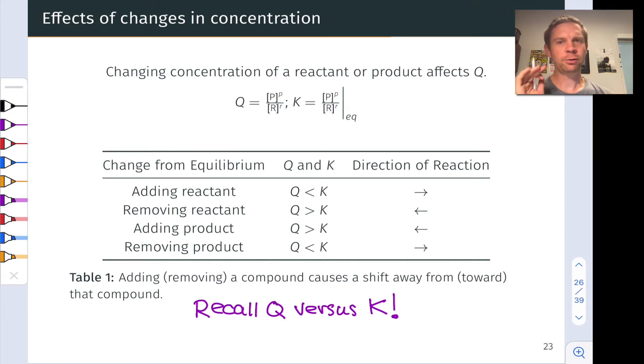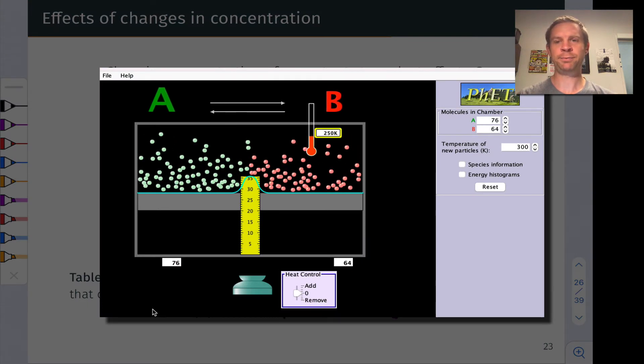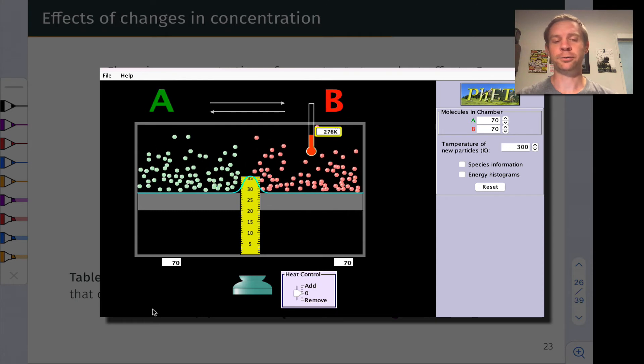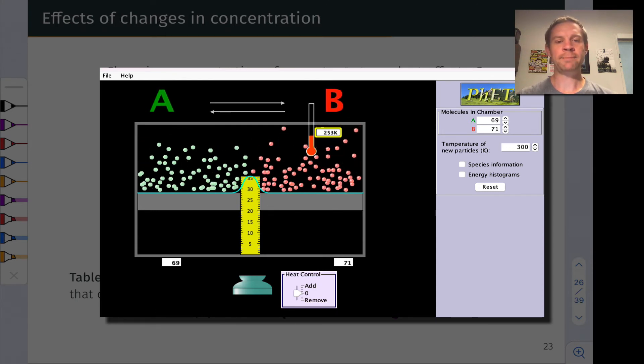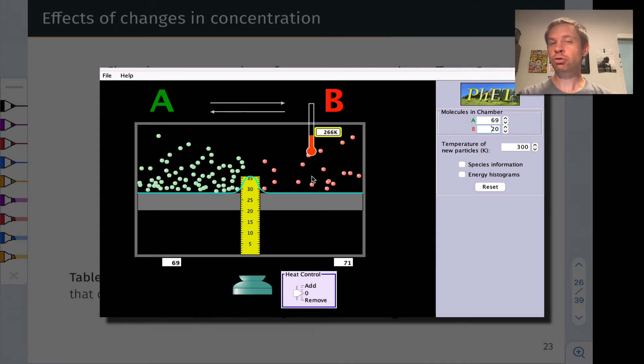Before we look at the slide, I want to show you what this looks like on the simulation we've been looking at where we have basically an equal mixture of reactants A and products B. Watch what happens when I remove some of product B. Let's say I take B from 71 molecules down to 20 molecules. Well now, I'm in a situation where the product concentration is much lower than it wants to be with respect to equilibrium.